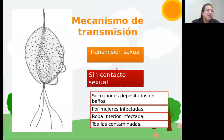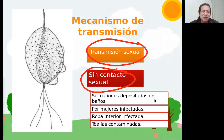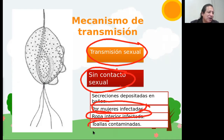Este parásito se puede transmitir por vía sexual, que es la que estamos viendo actualmente. Pero también — y esto es para aclarar — se puede transmitir sin contacto sexual. Esta transmisión sin contacto sexual puede ocurrir debido a ciertas circunstancias: por ejemplo, secreciones en las tazas de los baños, al no lavarse las manos y tocar la sección genital, al contacto con otra mujer infectada — esto más que todo se refiere cuando hay relaciones homosexuales —, cuando se comparte ropa interior que puede estar infectada, o también toallas contaminadas. El hombre suele ser asintomático.